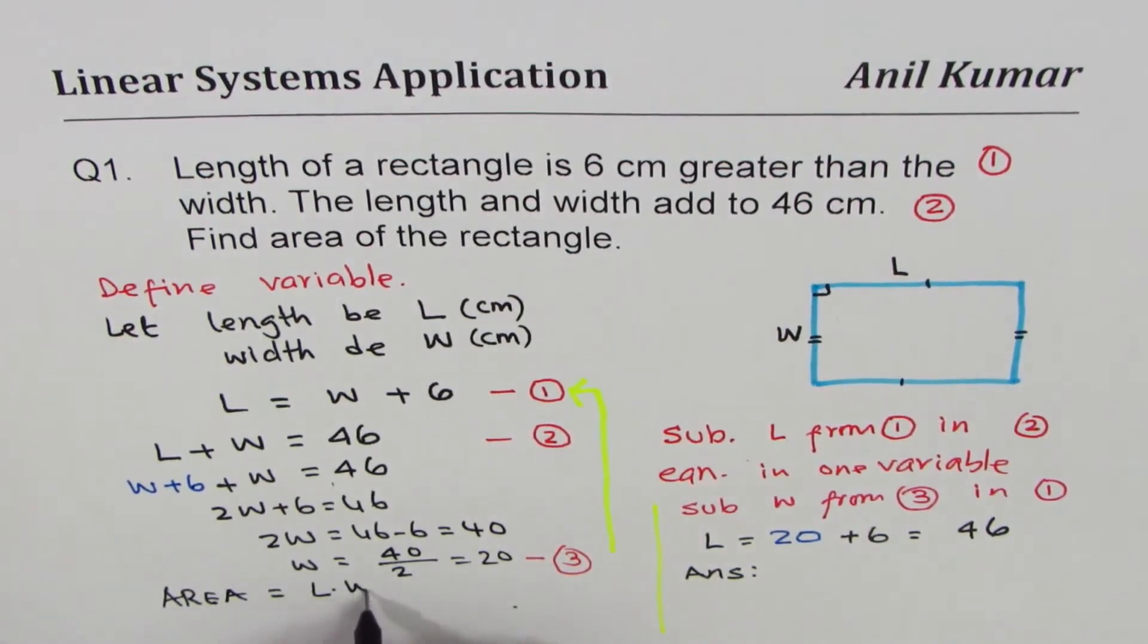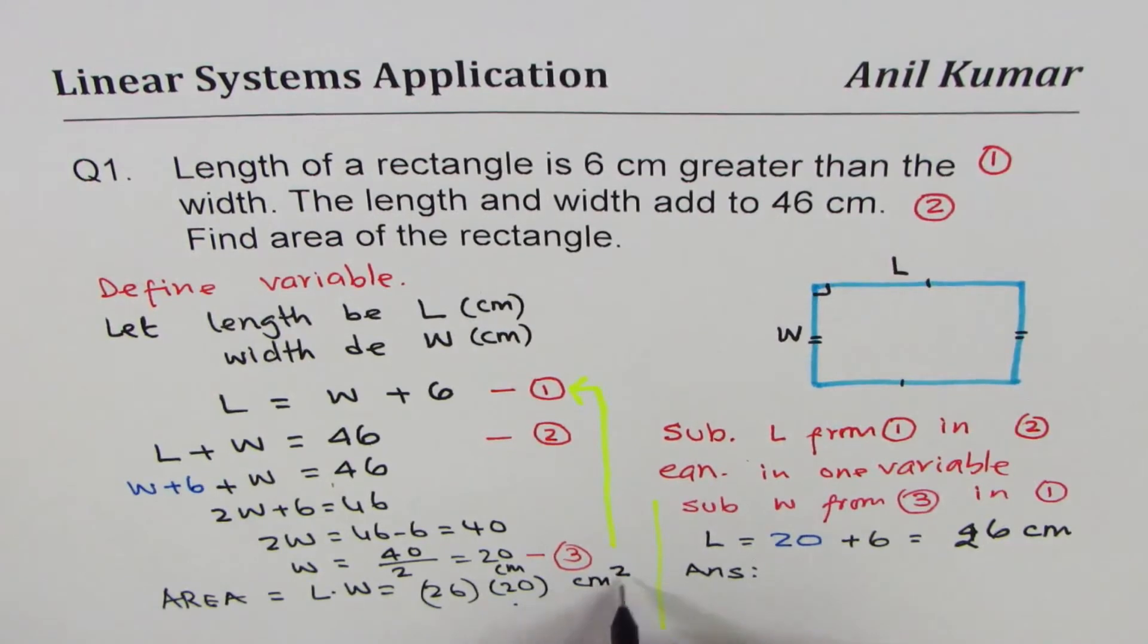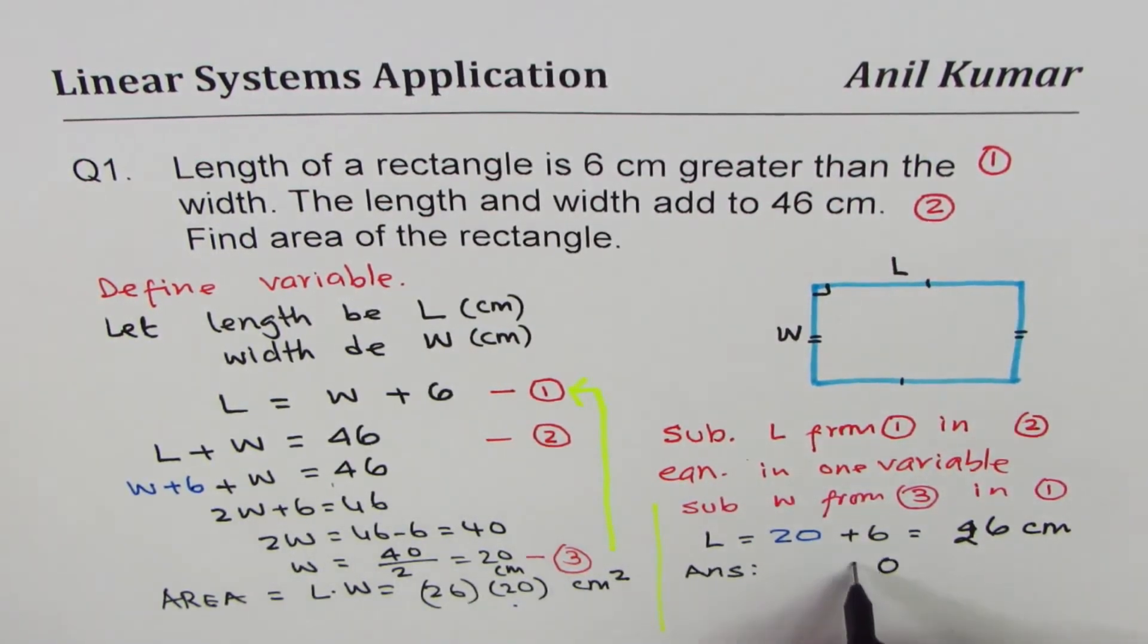Let me write down what the area equals to. Area equals to length times width. Length is 26 cm and width is 20 cm, so the units will be cm squared. Length times width, so it is 26 times 20. We get 520 cm squared.